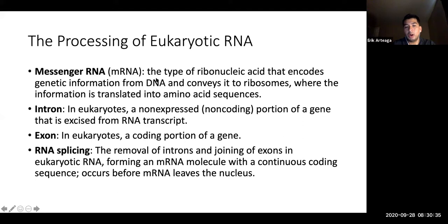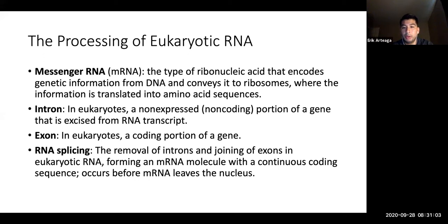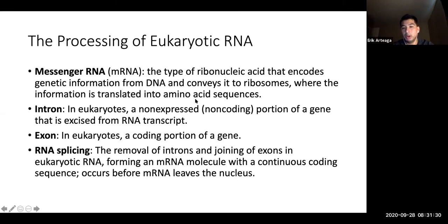Processing of eukaryotic RNA: messenger RNA (mRNA) is processed RNA that passes through the nuclear pore and plugs into a ribosome. It encodes genetic information from DNA and conveys it to the ribosome, where it's translated into an amino acid sequence. The triplet codons are read from the mRNA and used as a template to gather amino acids. AUG always codes for methionine and is always the first sequence in the mRNA.